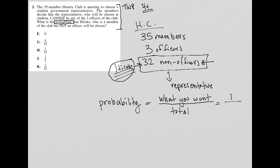And how many total people if I'm randomly choosing from those 32 people? The total number of people I'm choosing from is 32. So the probability that Hiroko is chosen is 1 out of 32, and therefore the correct answer is choice K.